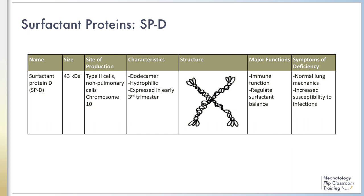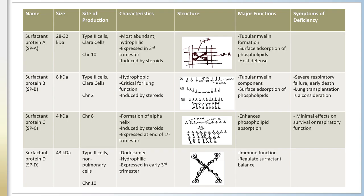In animal models, symptoms of surfactant protein D deficiency include increased susceptibility to infections in the setting of normal lung function. No humans have been found to have isolated surfactant protein D deficiency. Please pause the recording here and take a moment to compare and contrast the characteristics, structure, and function of the four surfactant proteins.